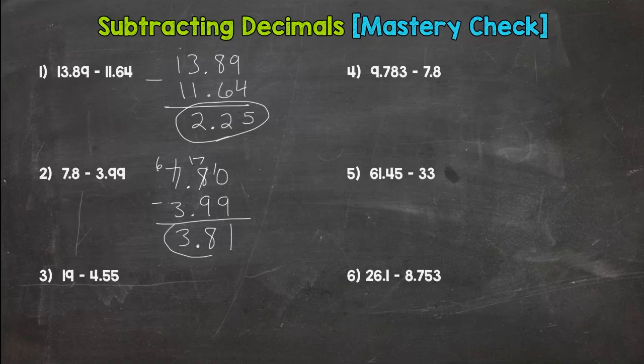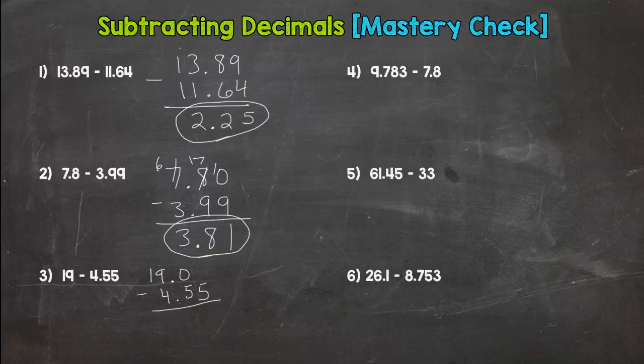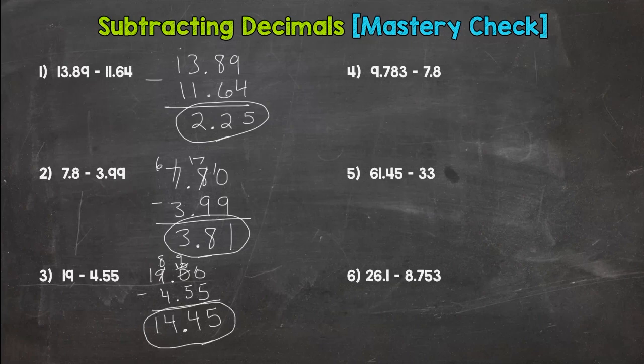Number 3, we have a whole 19 and hopefully we know that a decimal comes right after the whole number. This one will look really offset here, but that's alright. We put our placeholder zeros in and we need a bunch of borrowing. Turn to a 10, but we need to borrow from the 10. 10 minus 5 is 5, 9 minus 5 is 4, decimal straight down, 8 minus 4 is 4, and then 1 minus 0 is 1. So 14.45 hundredths.